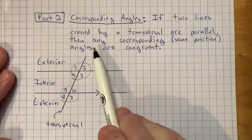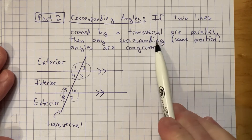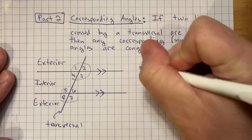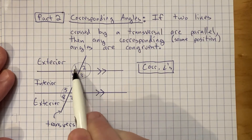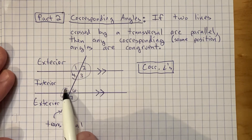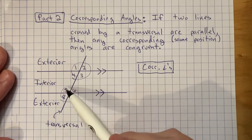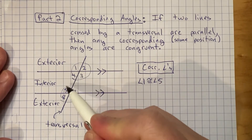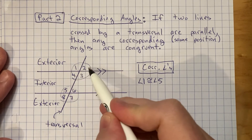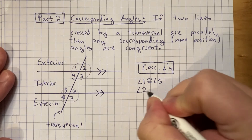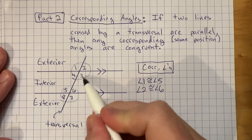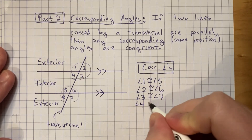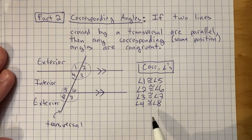Going back to the description: we have two lines crossed by a transversal and they're parallel. Corresponding angles are angles in the same position, and those are congruent. For instance, angle one is congruent to angle five because they're both in the upper left. Angle two is congruent to angle six — both in the upper right. Angle three is congruent to angle seven — both in the lower right. And angle four is congruent to angle eight. You can find these corresponding angles all over the diagram.